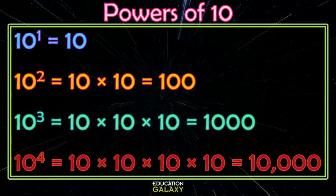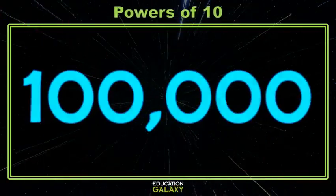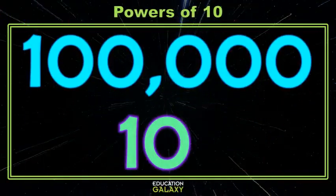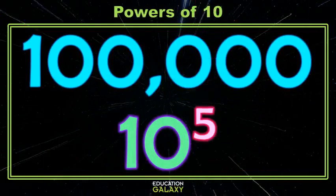Do you notice a pattern here? Did you notice when my exponent is 1 that I have 1, 0? And when my exponent's 2, I have 2 0s. When my exponent's 3, I have 3 0s. And when my exponent's 4, I have 4 0s. A pattern. So if I gave you a number with 5 0s and told you it's 10 to the something, what would that something be? If you said 5, you are correct.